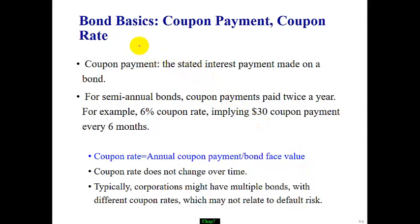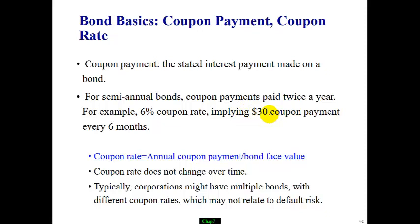Let's understand the basic terms associated with bonds. First is coupon payment or coupon rate. Coupon payment is the interest payment on the bond. For a semi-annual bond — for example, a 6% coupon rate bond — the coupon payments are made twice a year, every six months. So 6% implies a $60 annual payment, split into two payments of $30 every six months.